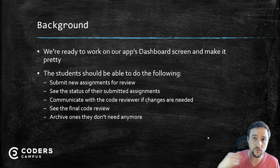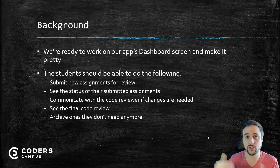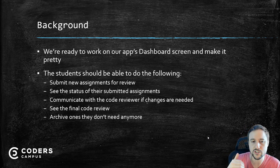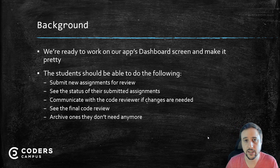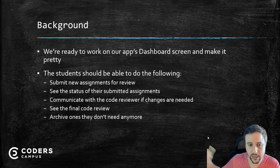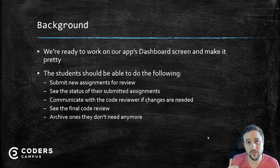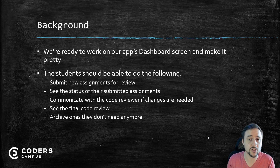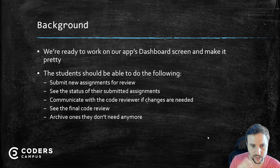To catch you up: we have an assignment submission app where students submit their assignments for code review. They do coding assignments and submit them to get reviewed by a code reviewer. I'm going to be using this app in the real world for my coding boot camp to streamline the whole process of student assignment submissions. When a student first submits their assignment, it goes into a pending review status. When it gets picked up by a code reviewer and the review starts, they'll see the status change — and that's what these cards will allow them to see.